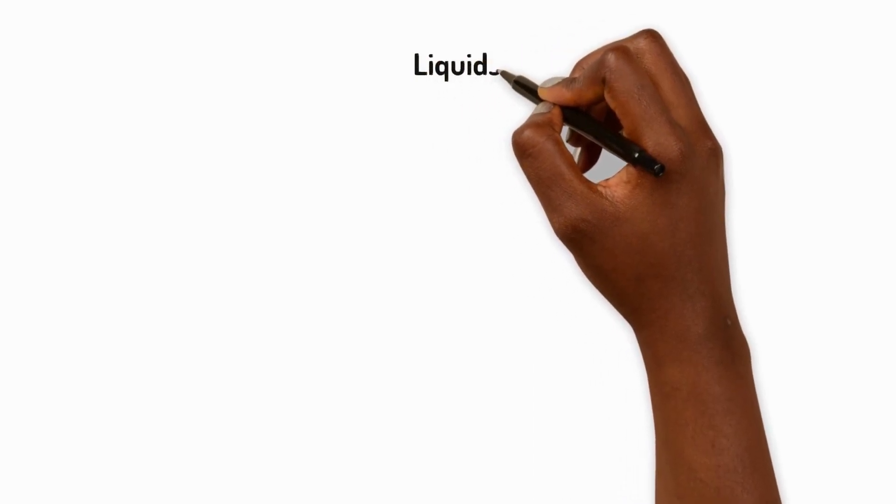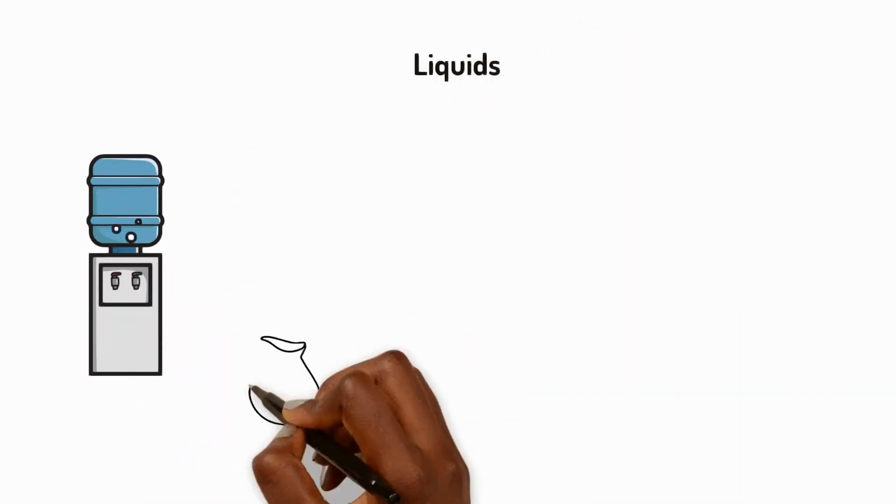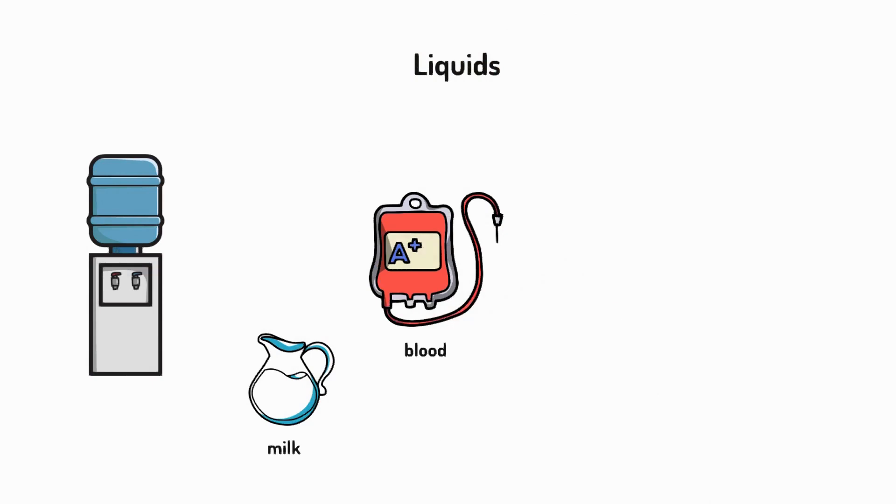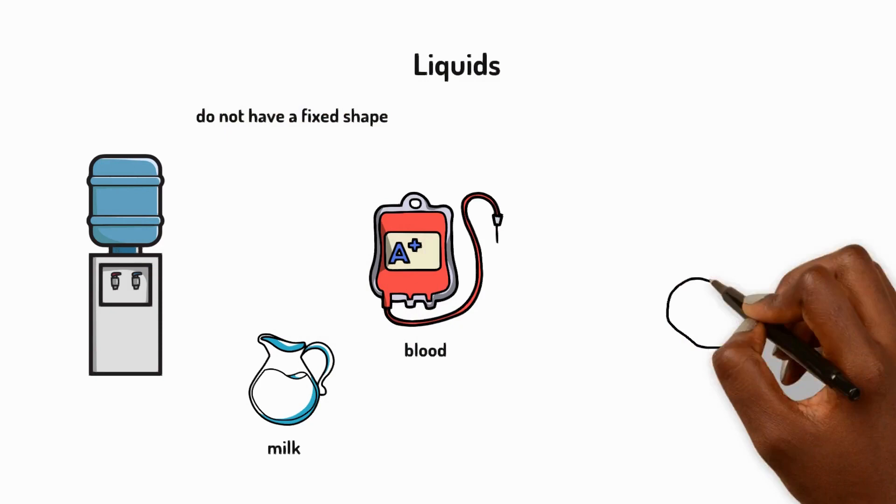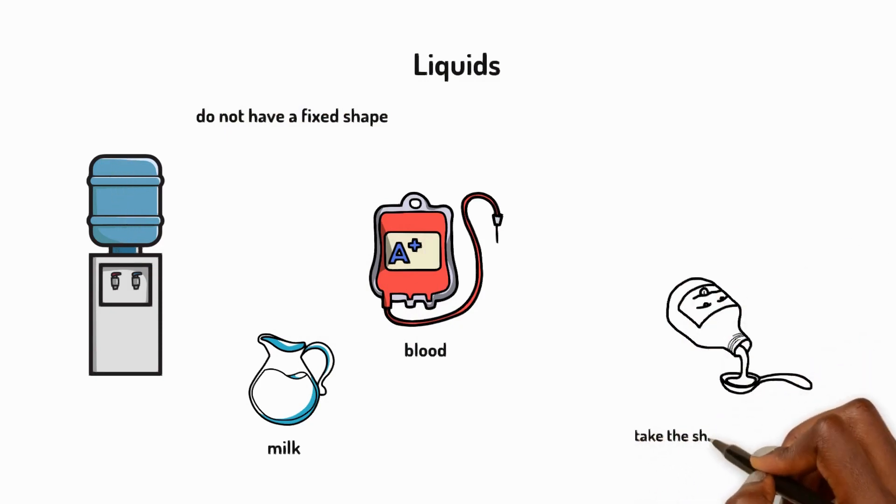Now let's talk about liquids. Water, milk, and blood are examples of liquids. Liquids do not have their own shape. They flow and take the shape of whatever container they're poured into.